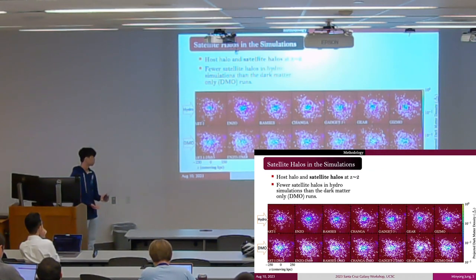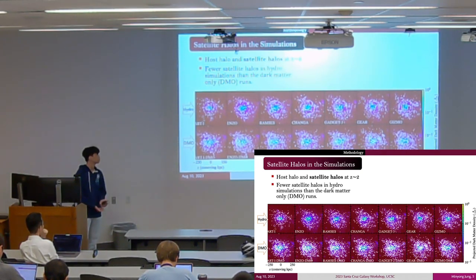These snapshots show the distribution of dark matter halos at redshift near z=2. White circles represent satellite halos and main halos identified from dark matter distribution.